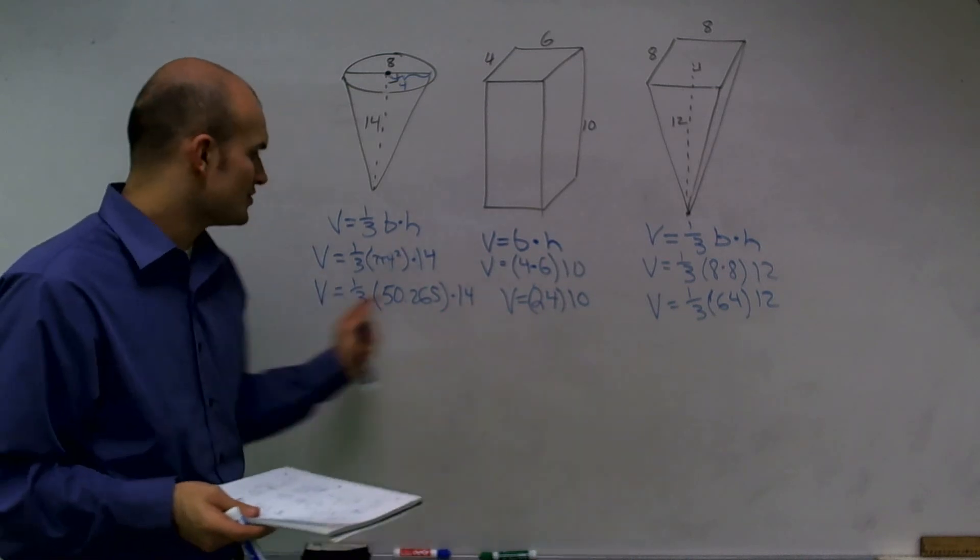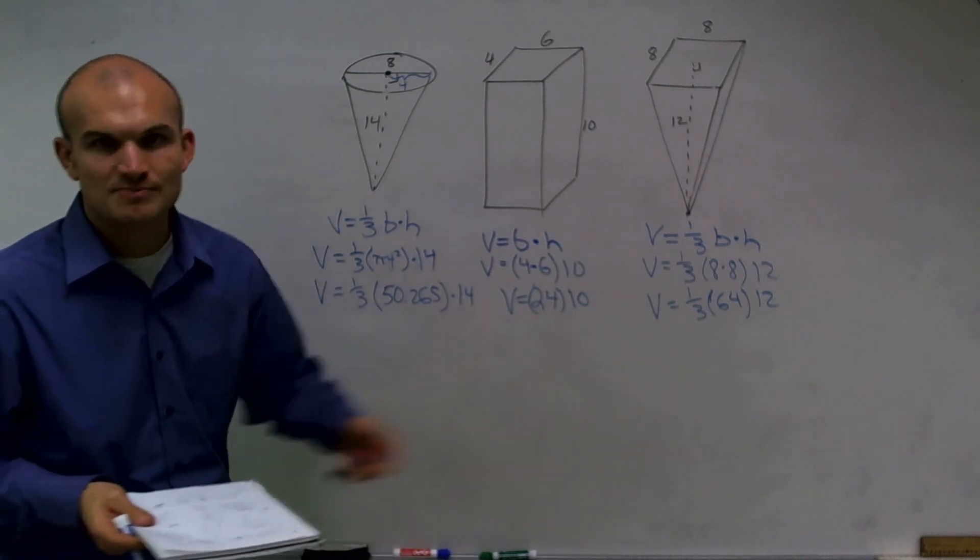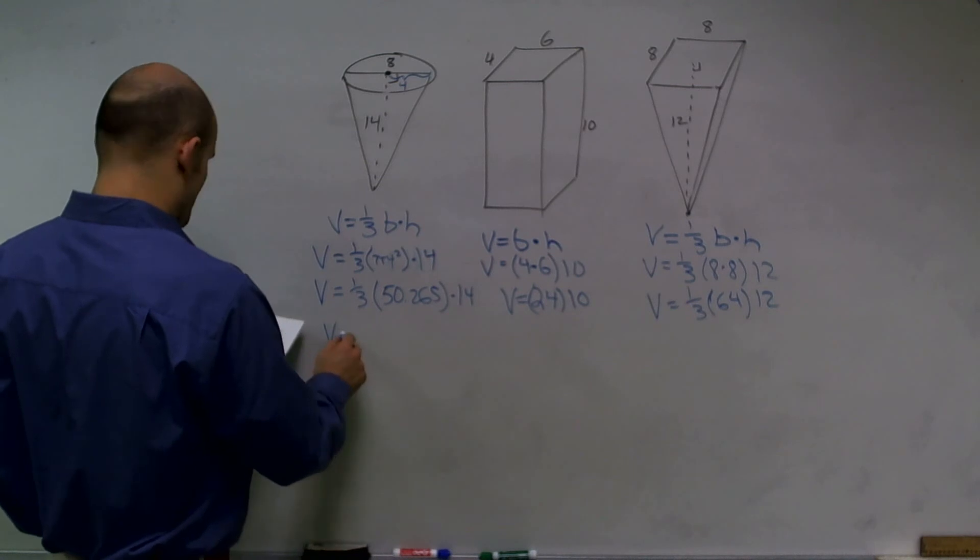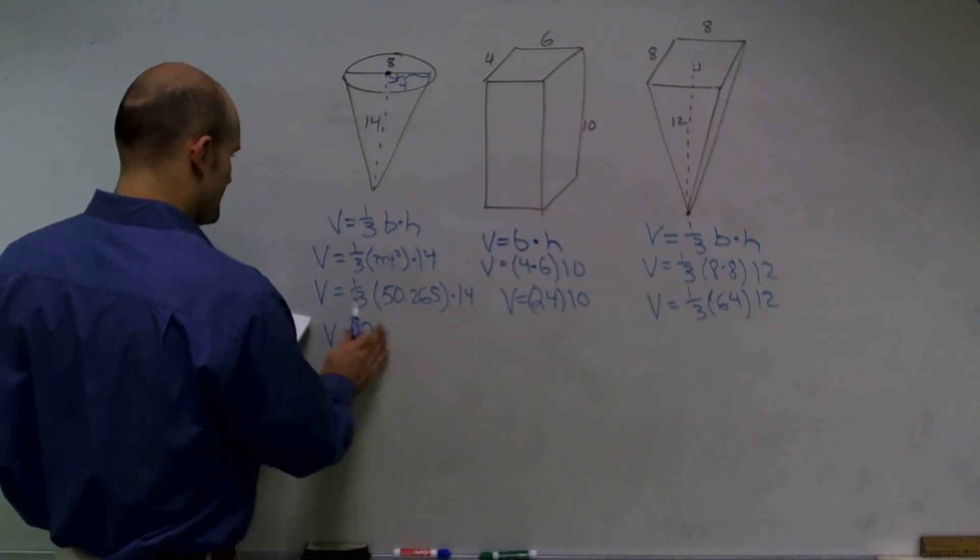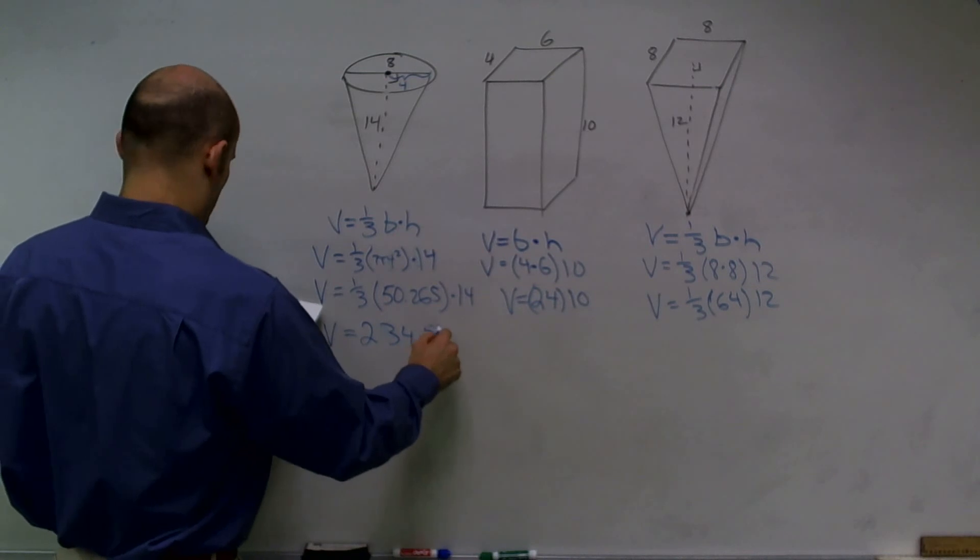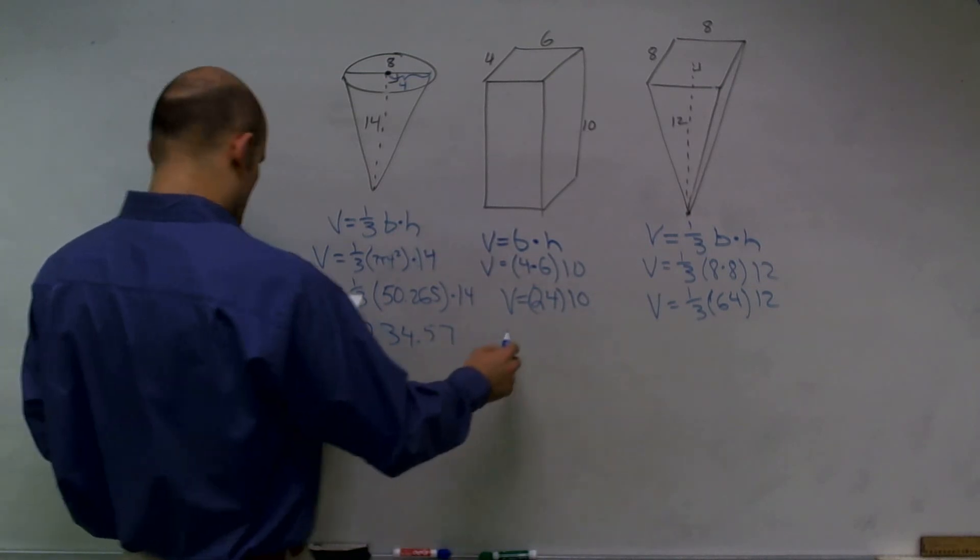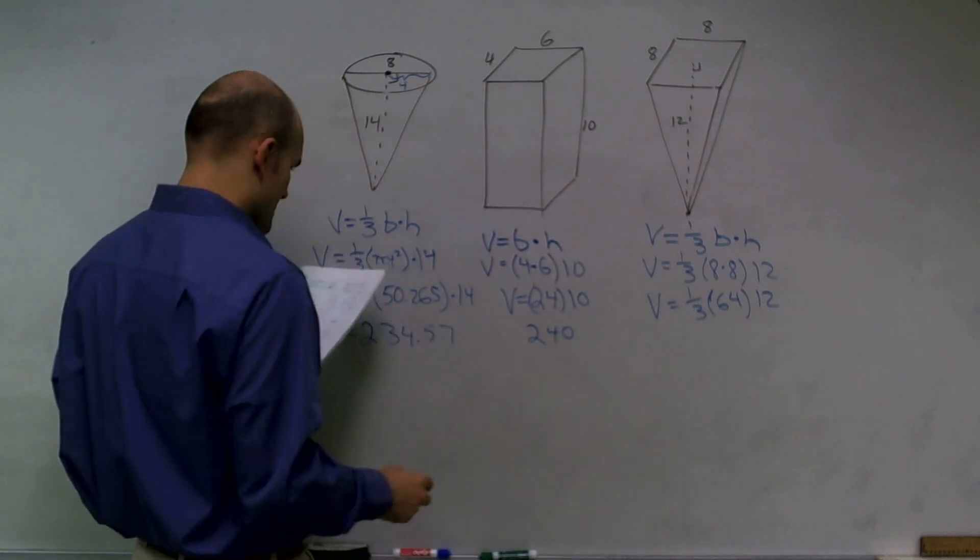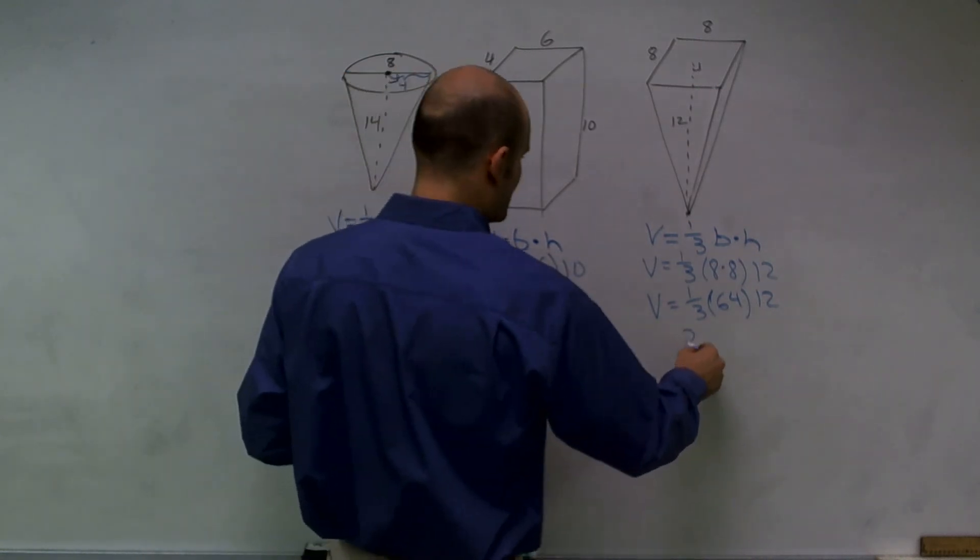Well, when you go ahead and do the rest of this, you can just multiply the rest here. What I end up getting for this answer is volume equals two hundred and thirty-four point five-seven. Here, I get two hundred and forty, and here, I get two hundred and fifty-six.